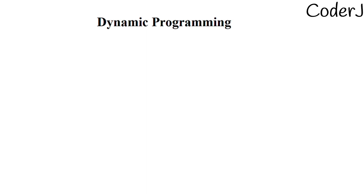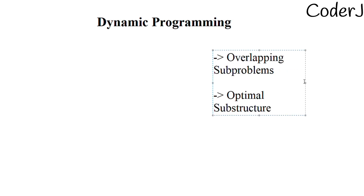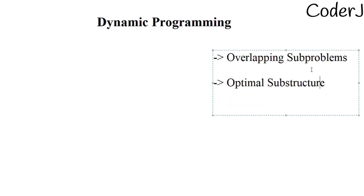Before moving on to the actual coding part, let's first learn a few terms. In any problem, if you want to implement DP, you need two things: overlapping subproblems and optimal substructure. Let's understand what they are, because they form the foundation of everything we'll study.